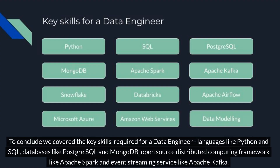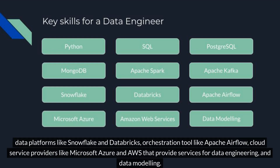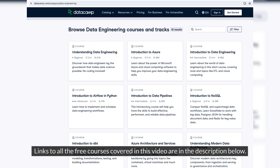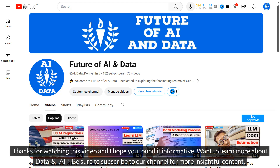To conclude, we covered the key skills required for a data engineer: languages like Python and SQL, databases like PostgreSQL and MongoDB, open-source distributed computing frameworks like Apache Spark, event streaming services like Apache Kafka, data platforms like Snowflake and Databricks, orchestration tools like Apache Airflow, and cloud service providers like Microsoft Azure and AWS. Links to all the free courses covered in this video are in the description below. Thanks for watching, and be sure to subscribe to our channel for more insightful content on data and AI.